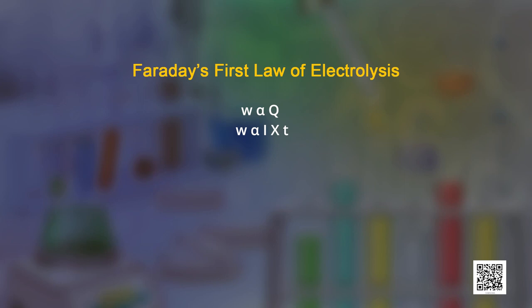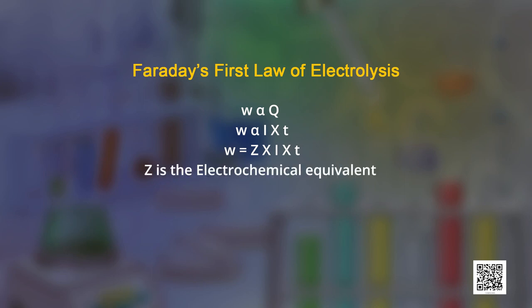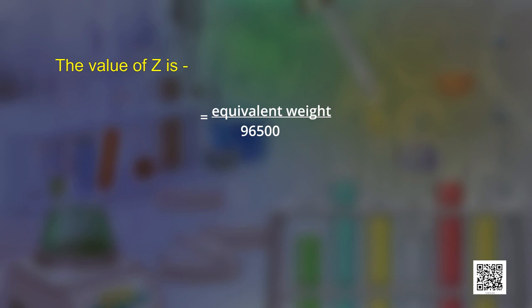This simplifies to W = Z × I × t, where Z is the proportionality constant known as electrochemical equivalent. It is defined as the mass of the substance deposited by passing 1 coulomb of charge, or by passing 1 ampere of current for 1 second through the electrolyte. Its value equals the equivalent weight divided by 96500, and is denoted as E.